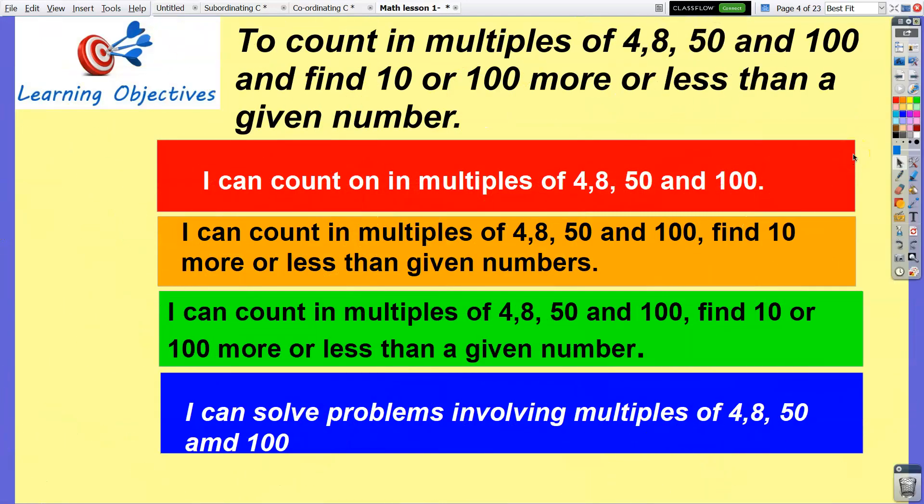Our learning objective is to count in multiples of 4, 8, 50 and 100, and find 10 or 100 more or less than a given number. Success criteria: I can count in multiples of 4, 8, 50 and 100; find 10 or 100 more or less than given numbers; and solve problems involving these multiples.